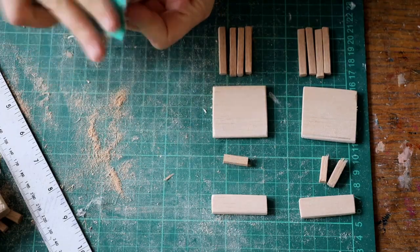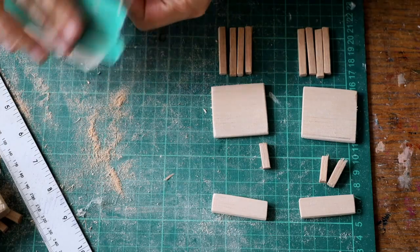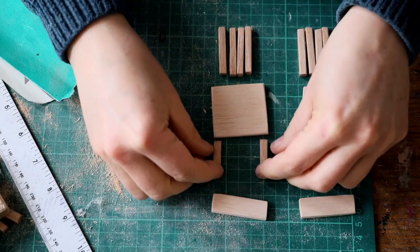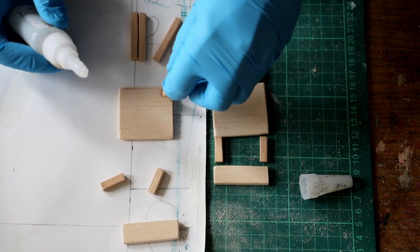For the chair I followed the same principles. I've created all my pieces first, sanded them down, made sure they fit nicely with each other and they have the right scale. Then I've used some super glue to hold them together.